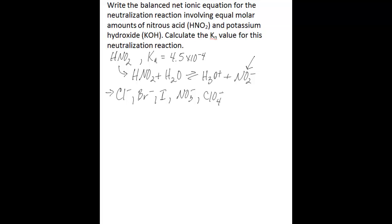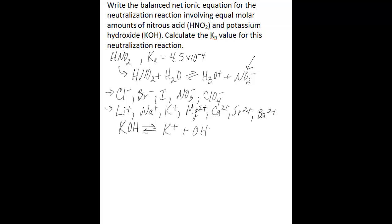None of these anions will really participate in the acid-base chemistry in a solution — you can consider them inert. There are also cations that come from strong bases that do not react appreciably with water, including lithium, sodium, potassium, magnesium, calcium, strontium, and barium. When potassium hydroxide dissociates into potassium and hydroxide, potassium is part of this list, so you know you're dealing with a strong base, which is potassium hydroxide, and a weak acid, which is nitrous acid.